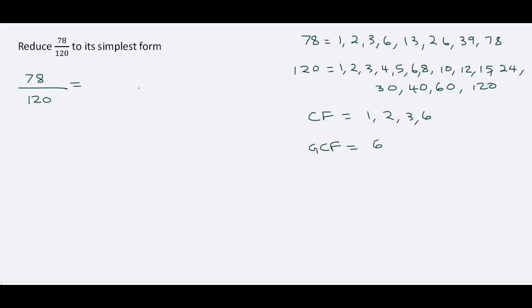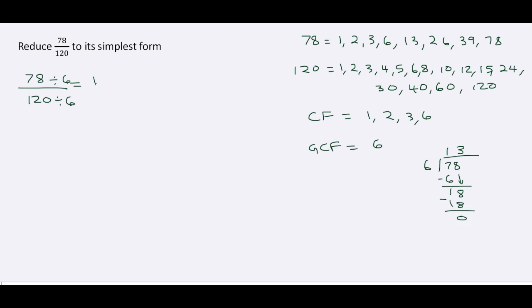So we now have 78 divided by 6 over 120 divided by 6. For 78 divided by 6: 7 divided by 6 is 1, remainder 1, bring down 8, 18 divided by 6 is 3, so 78 divided by 6 is 13. 120 divided by 6 is 20. So the reduced fraction is 13 over 20.